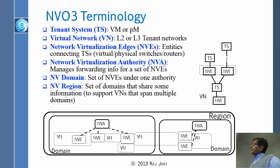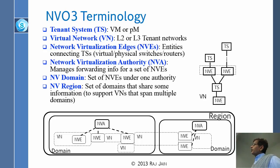NVA — Network Virtualization Authority — manages the NVEs. Each tenant has its own NVE and its own NVA that manages how to route from one NVE to the next. Then there is the NVE domain, which is a set of NVEs under one authority — this is what we call an overlay.